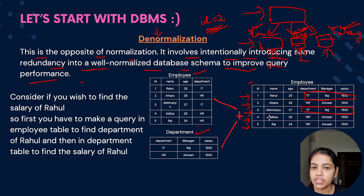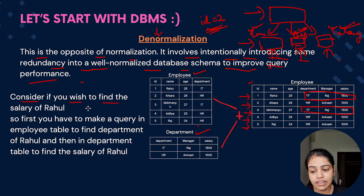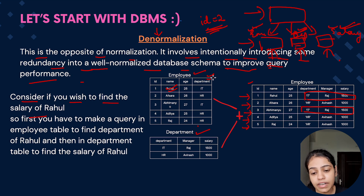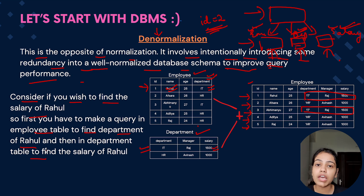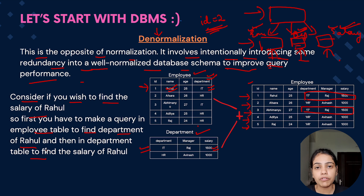So because of these issues we introduced the concept of denormalization — we intentionally introduce redundancy, but if all the data is present in the same table, the query time would be very less. For example, to find the salary of Rahul, first we need to find his department by querying the employee table, and once we get his department — say IT — we again have to query the department table to fetch his salary. So we are making multiple queries, which increases time, reduces speed, and the API takes a lot of time to return results.